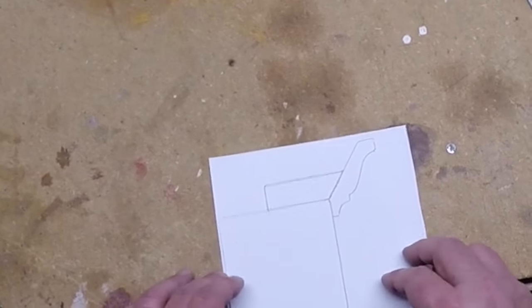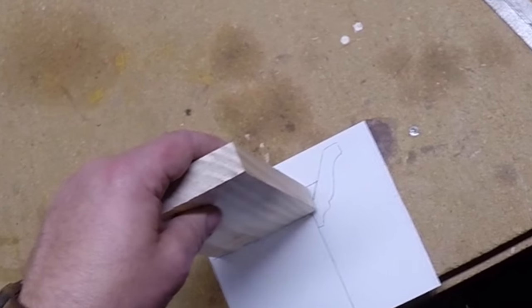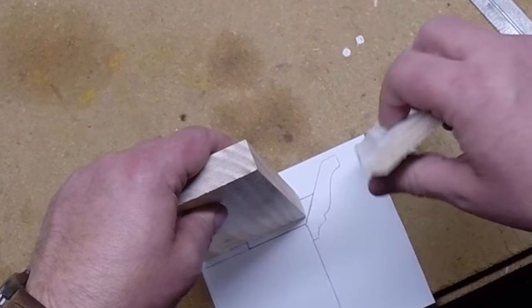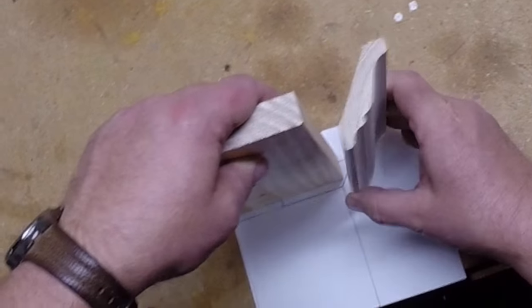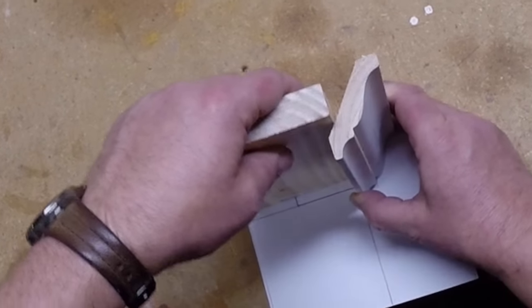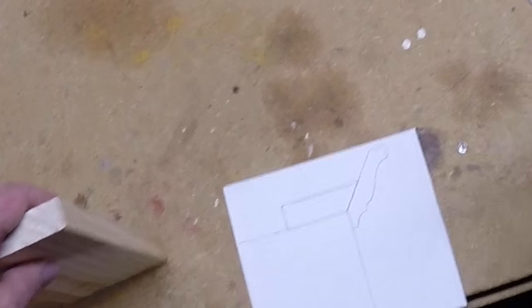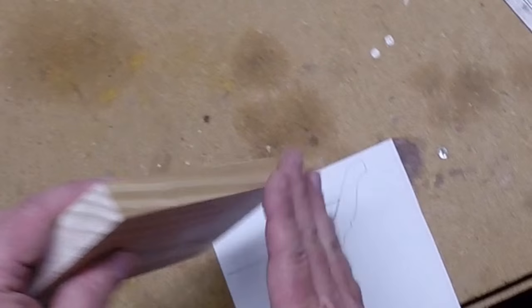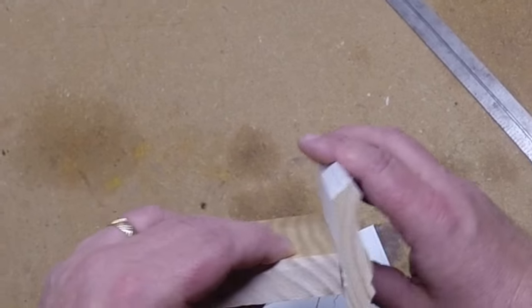So the better approach in this situation is to create a backing block. That would be just a piece of pine that you cut to actually fit behind the crown molding, that sits on the cabinet. The backing block sits right behind it. Now the challenge there is you got to cut it at an angle so that it actually fits flat.